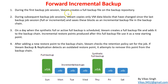Next is forward incremental backup. During the first backup job session, Veeam creates a full backup — same as before. During subsequent backup jobs, Veeam copies only the data that has changed since the last full or incremental backup and saves it as an incremental file. On the day when a synthetic or active full backup is scheduled, Veeam creates a new full backup file added into the backup chain.